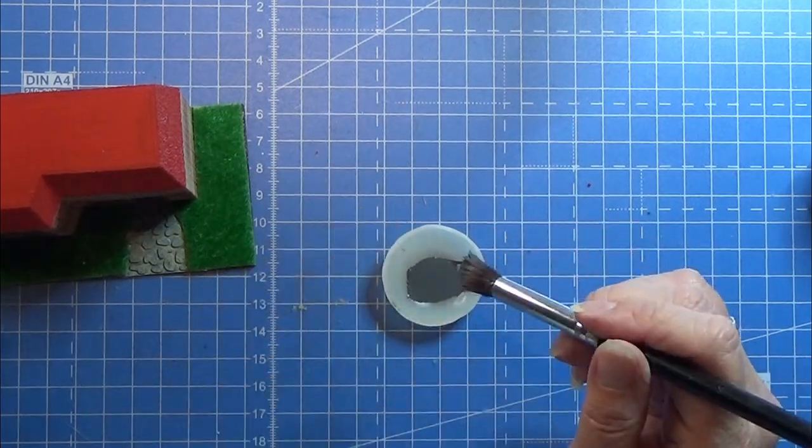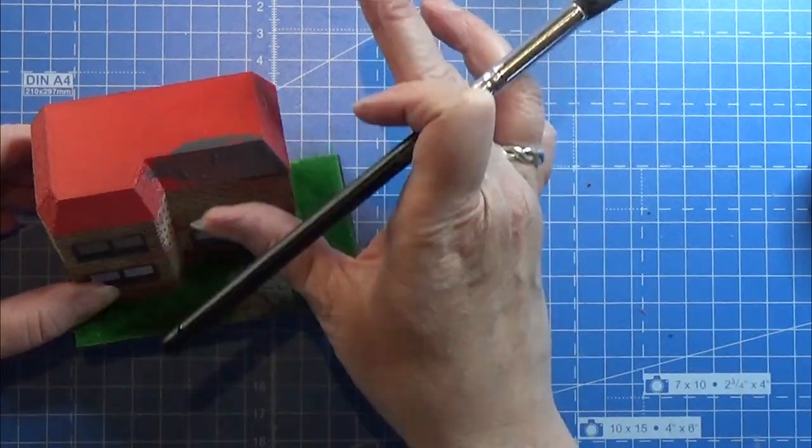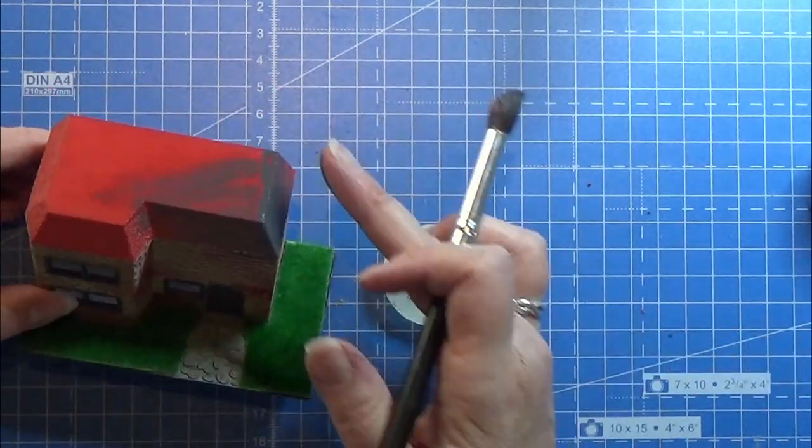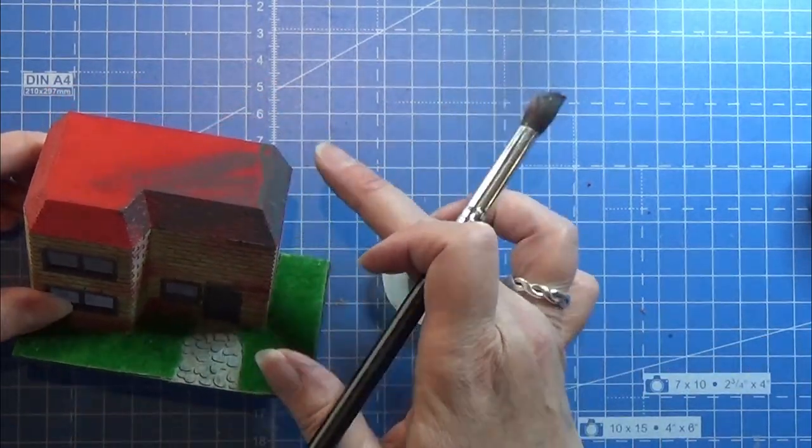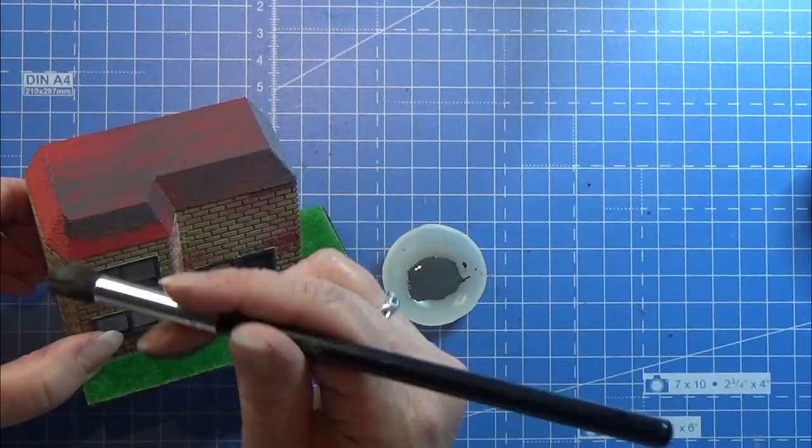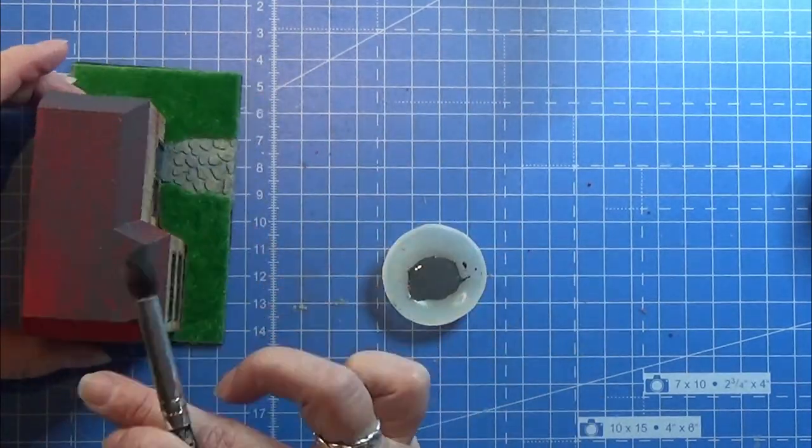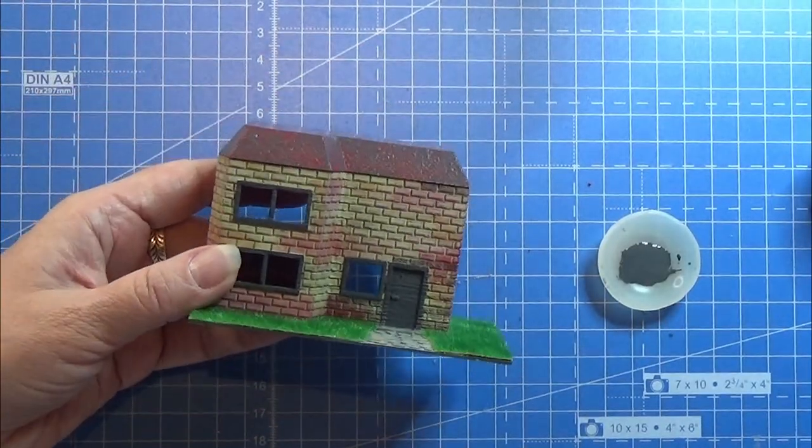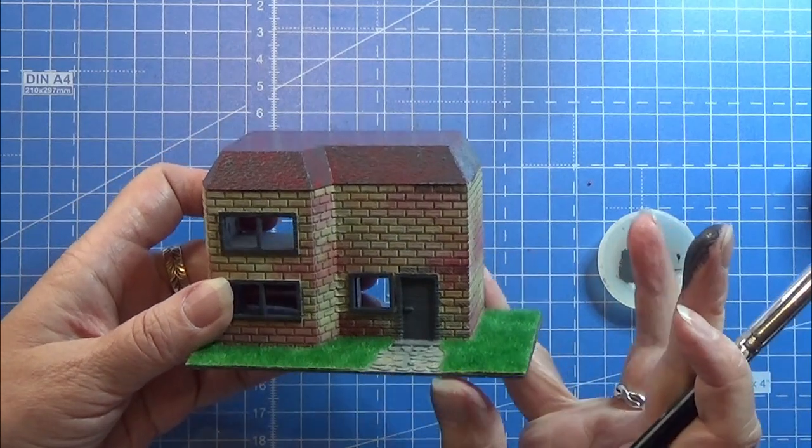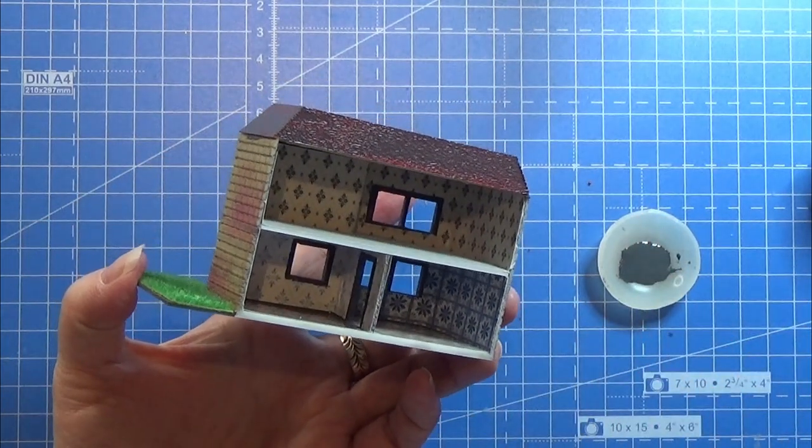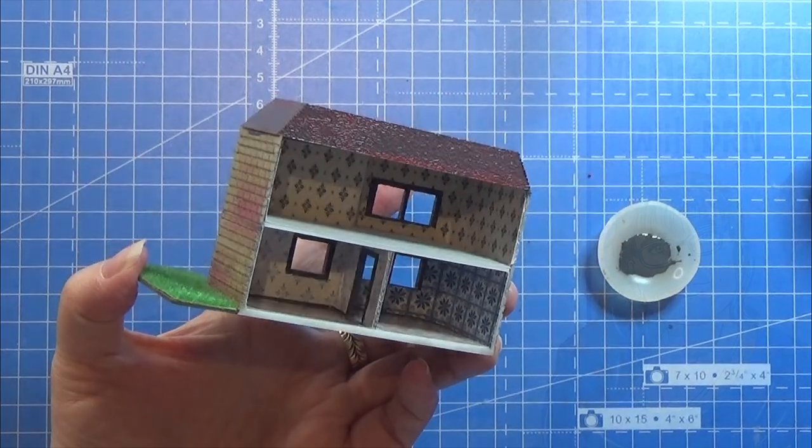When that's all dry, I mix a dark gray with some water and put that on the roof. I found that my finger did this better than my brush, so I'm just using my finger. The house itself is all done. Next week we'll make some furniture for the inside. Thank you for watching and happy crafting.